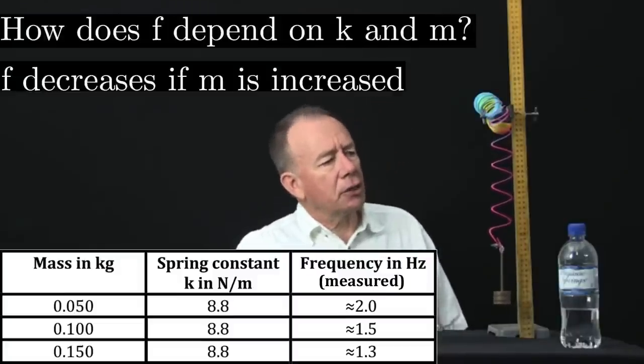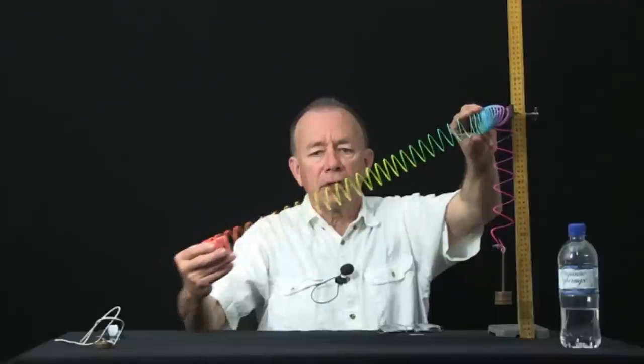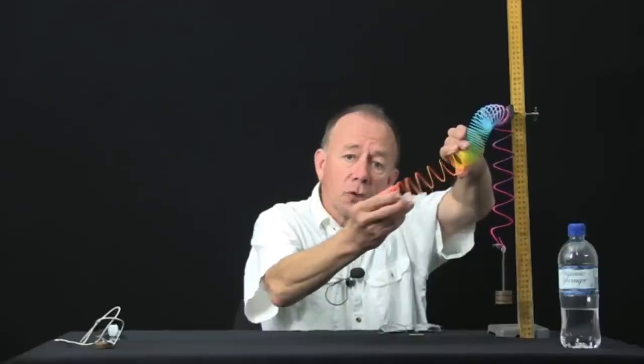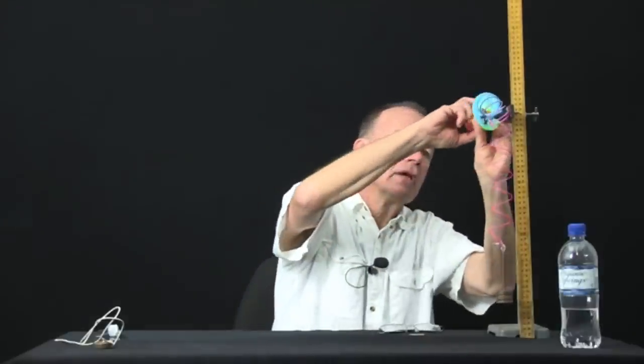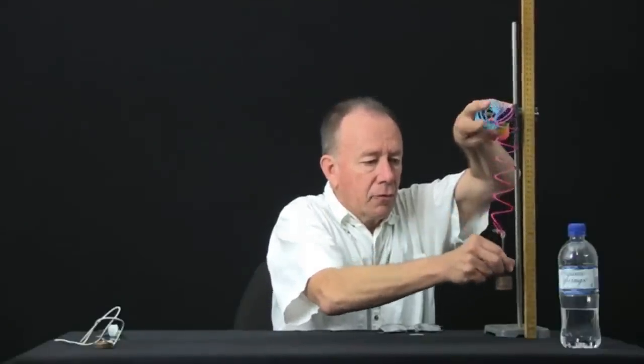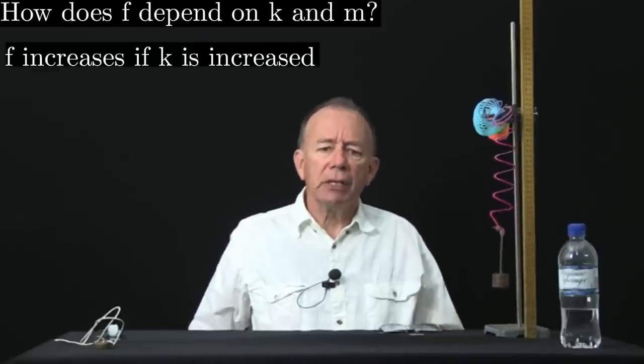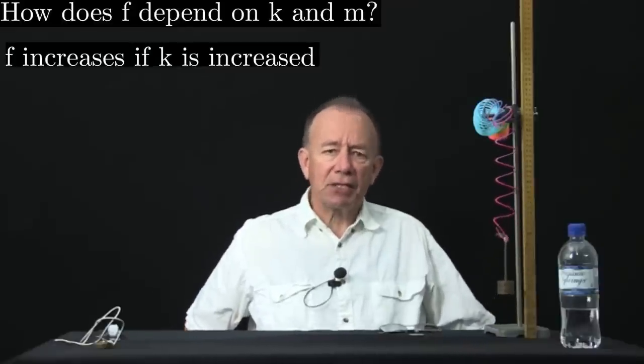I could also change the spring. The force required to stretch a long spring a certain amount is less than the force required to stretch a short spring. So a short spring is stiffer than a long spring. So let me shorten the spring here. I'll do that just with my hand. And now, there we have short spring versus long spring. So it looks as though the frequency depends on the ratio of the spring stiffness, which we call k, to the mass m.